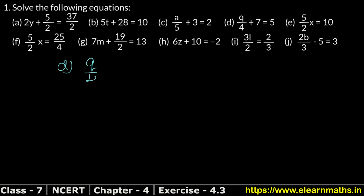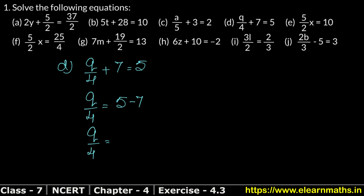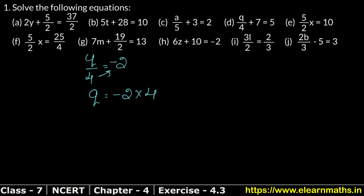Part d: q/4 + 7 = 5. The term q/4 is the variable term and 7 moves to the right side as minus: q/4 = 5 − 7 = −2. Since 4 is dividing q, it becomes multiplication on the other side: q = −2 × 4 = −8. That is the answer.